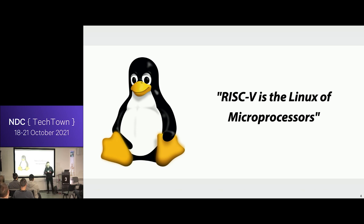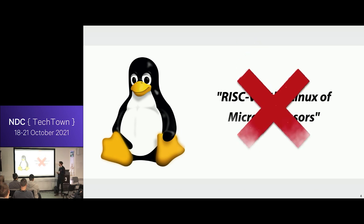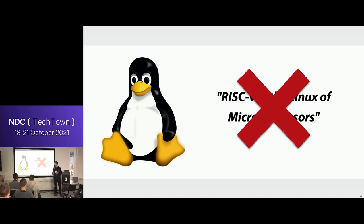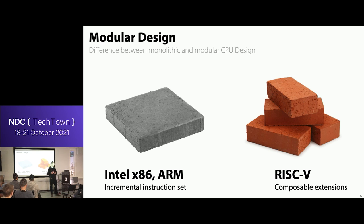You often see RISC-V pitched as a sort of Linux for microprocessors, and I think that's actually a bit of a bad characterization. For me, that was what made me not care that much about RISC-V initially, because it sounded like just a me-too microprocessor that was open source but did everything else like everybody else. I think a more important part of RISC-V is actually that it's a modular design, which is not common in the industry.